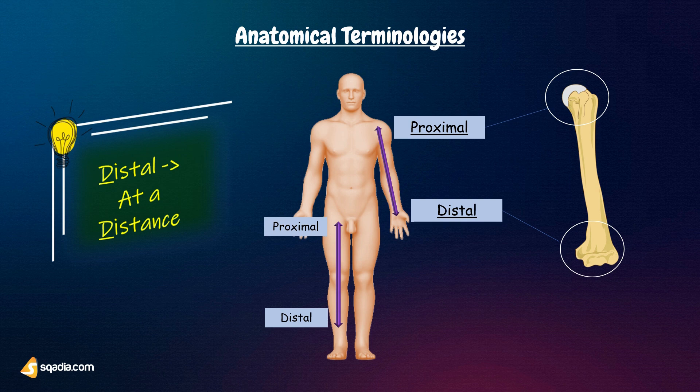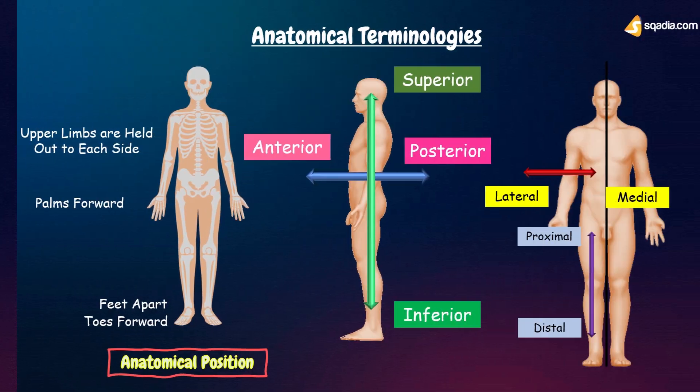There are also terminologies that are specific to the bones. We will talk about them as we go through this lecture. For now, you can use this diagram to better remember these anatomical terminologies. The focus of our video will be on the bones of the upper limb and their distinct bony features. So stay tuned.